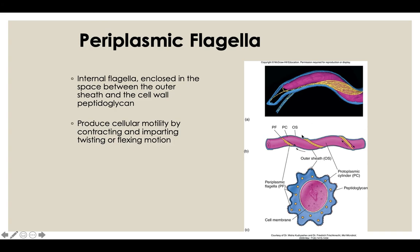The periplasmic flagella allows bacteria to keep their flagella when inside a host. Most bacteria drop their flagella when invading a host because flagella attract the immune system's attention — a good way to get killed. Bacteria with periplasmic flagella don't have to worry about this because the outer membrane hides the flagella from the immune system. These bacteria can use their flagella inside the host, which is a very beneficial advantage.